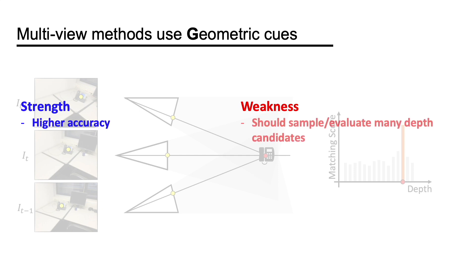However, a large number of depth candidates should be evaluated. And multi-view consistency can be violated in the presence of occlusion and object motion. Lastly, the multi-view matching becomes ambiguous for textureless and reflective surfaces.